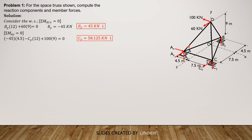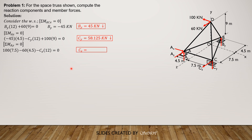Next, we sum up moment about AY to solve for CZ. By the right-hand thumb rule, CZ is negative, so: negative CZ times 12, then negative 60 times 4.5, however 100 is positive — 100 times 7.5. Setting equal to 0, CZ is equal to 40 kN. Since it is positive, our assumed direction is correct.